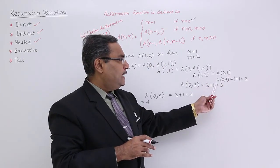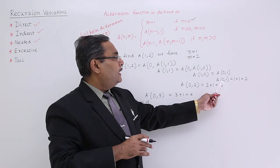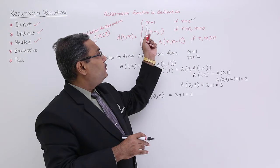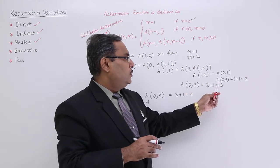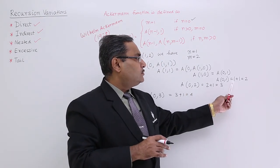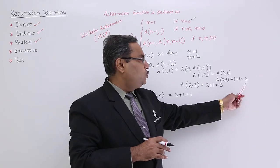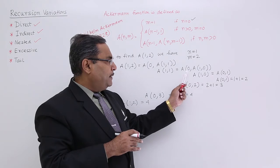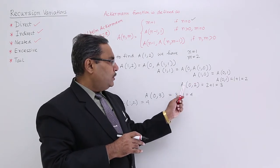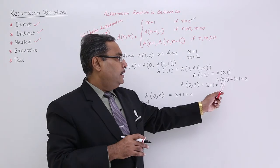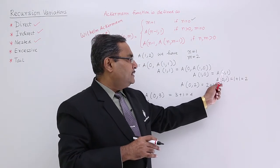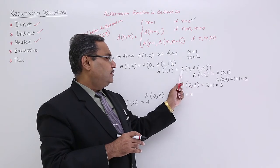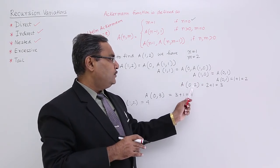Now A(0, 1): n is 0, so it satisfies the first case and gives the value m + 1. m is 1, so 1 + 1 = 2. So A(0, 1) = 2. That means it is calling A(0, 2). A(0, 2): again n is equal to 0, so it gives m + 1 = 3.